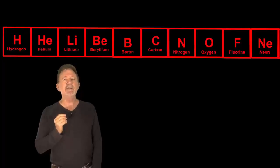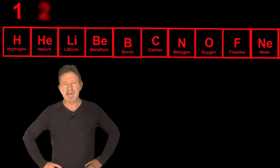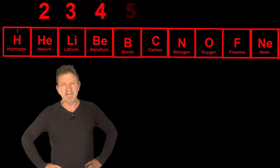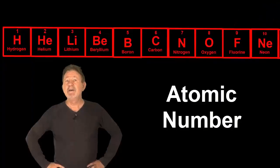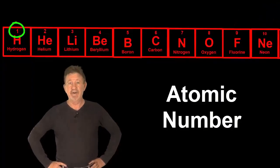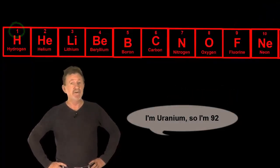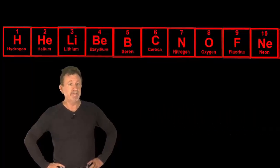They gave each element its own number showing its place in this list. Scientists called this its atomic number, so hydrogen must have an atomic number of 1 and uranium an atomic number of 92.